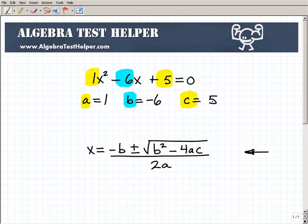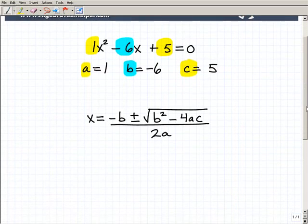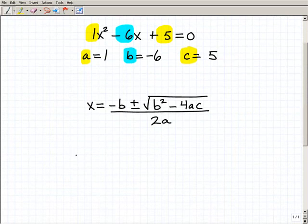So we have a is 1, b is negative 6, and c is 5. So what we have to do is plug those values into the quadratic formula down here. Now, this is where students really have to be careful here. So let me go ahead and show you and talk you through the common pitfalls where students make a mistake.